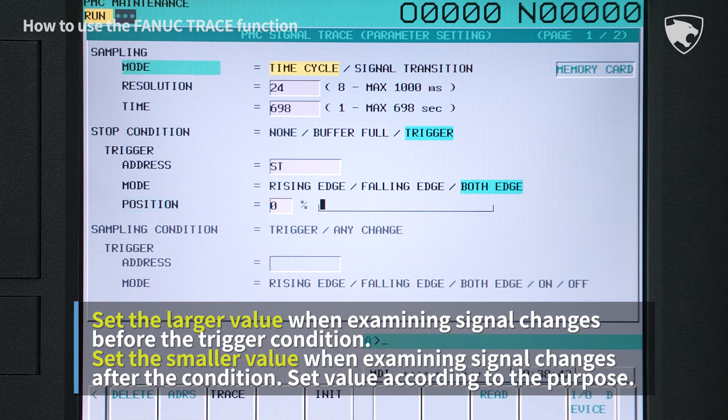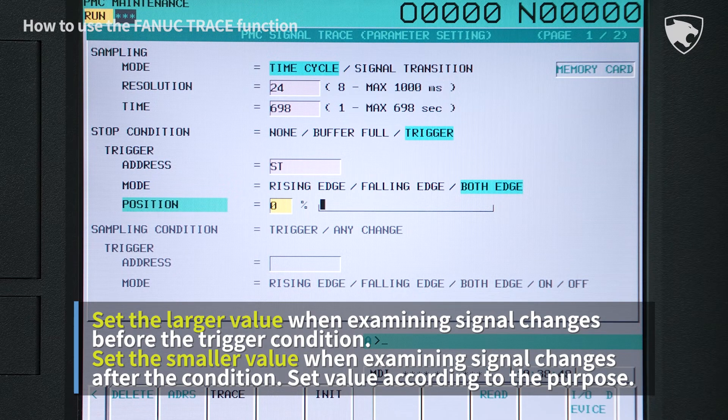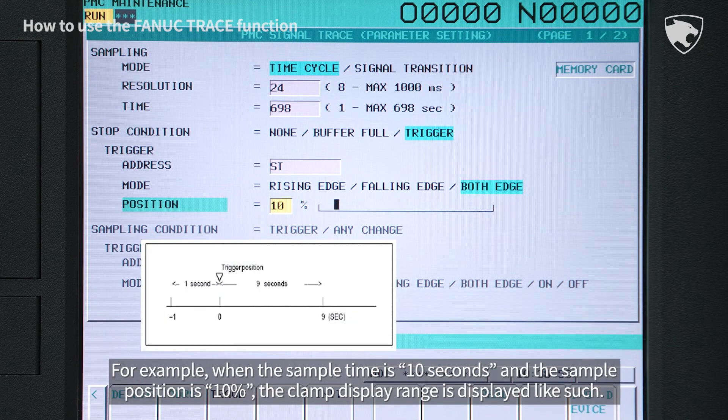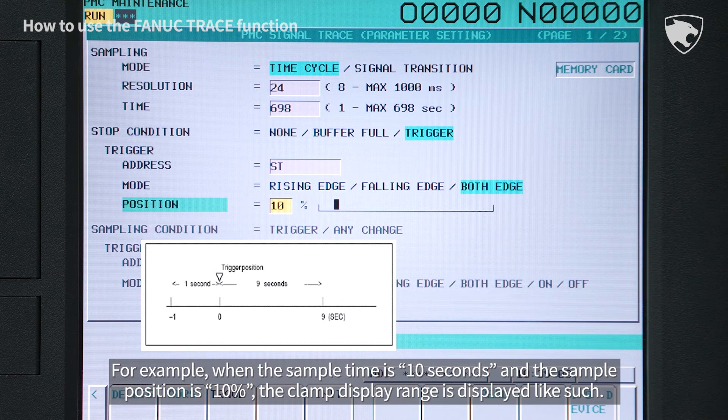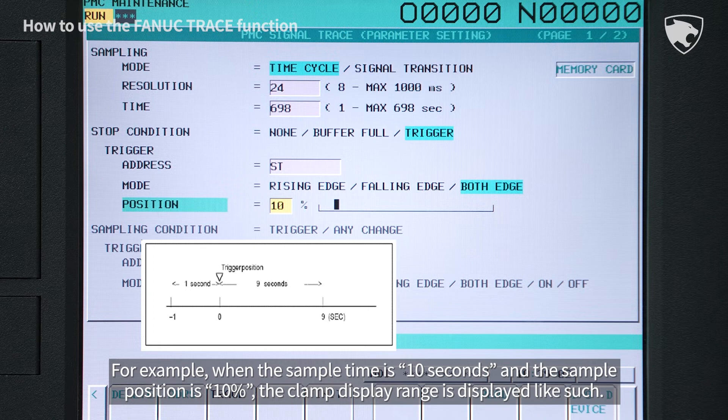Set the larger setting value if signal changes are examined before the trigger condition, or set the smaller setting value if changes are examined after the trigger condition. For example, when the sample time is 10 seconds and the sample position is 10 percent, the clamp display range is displayed like such.